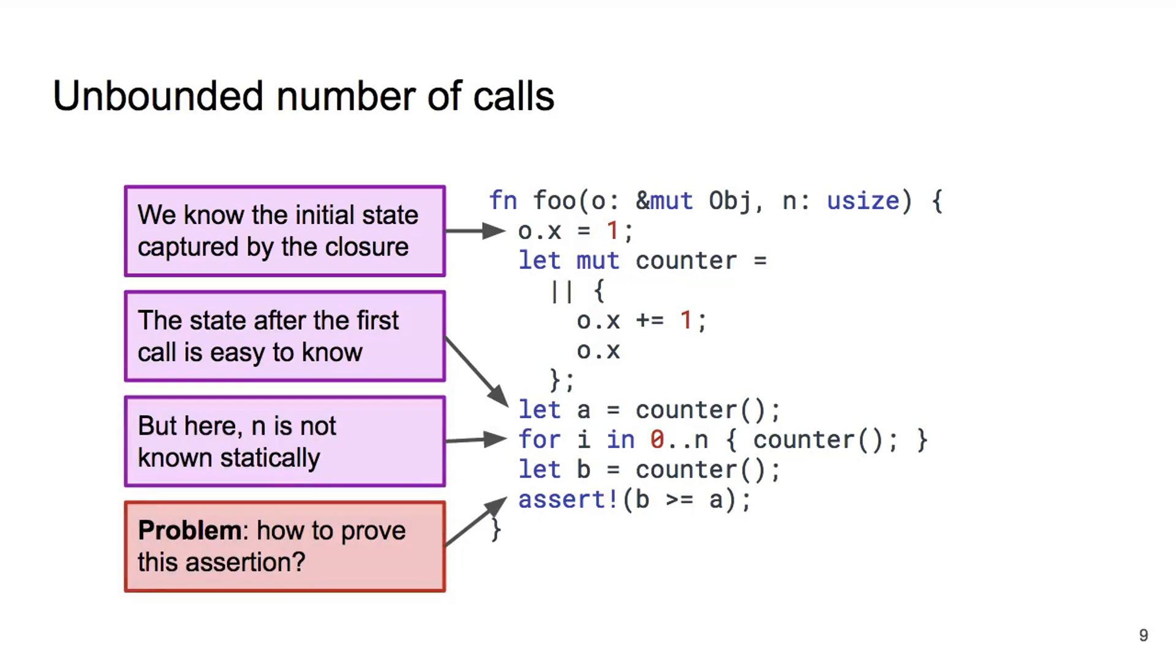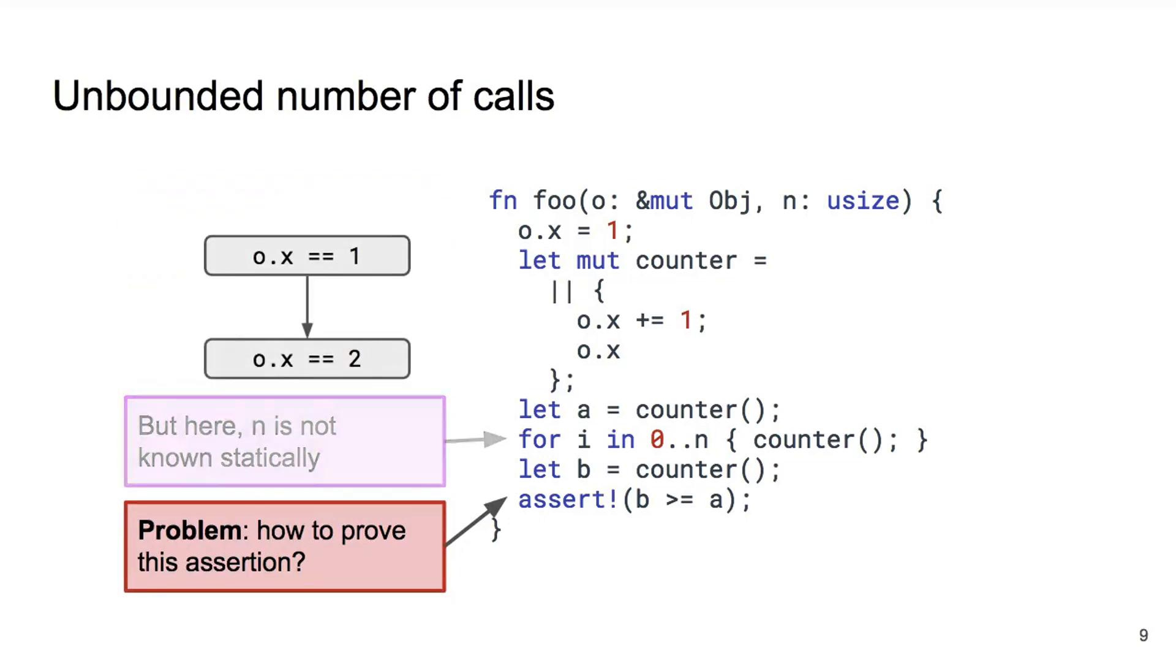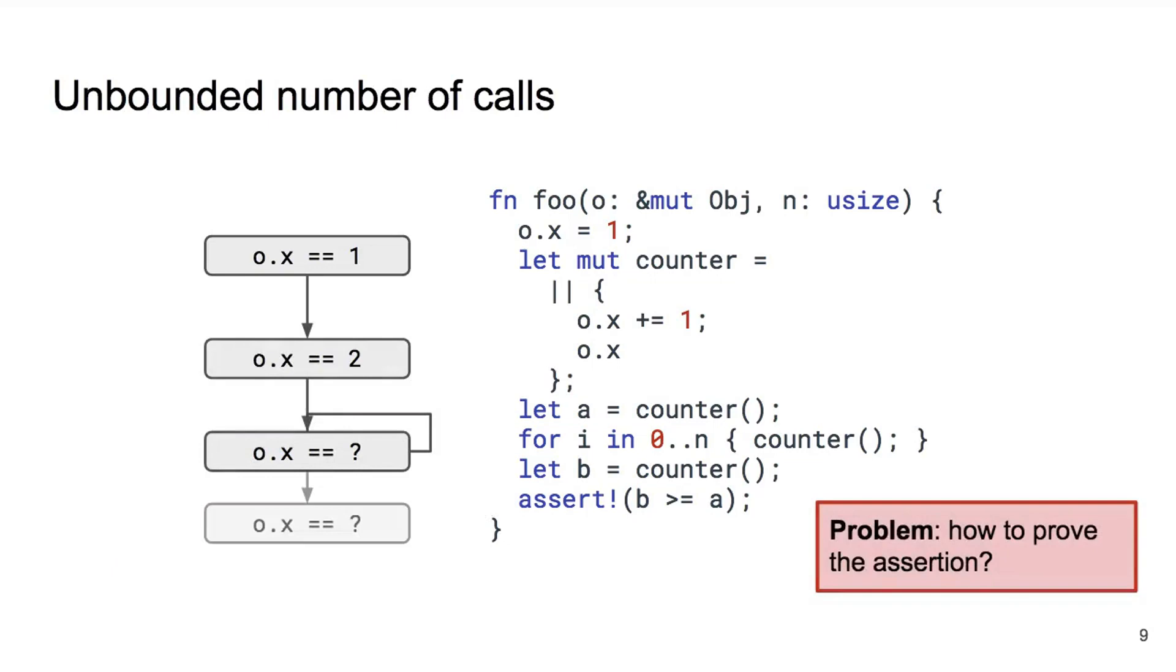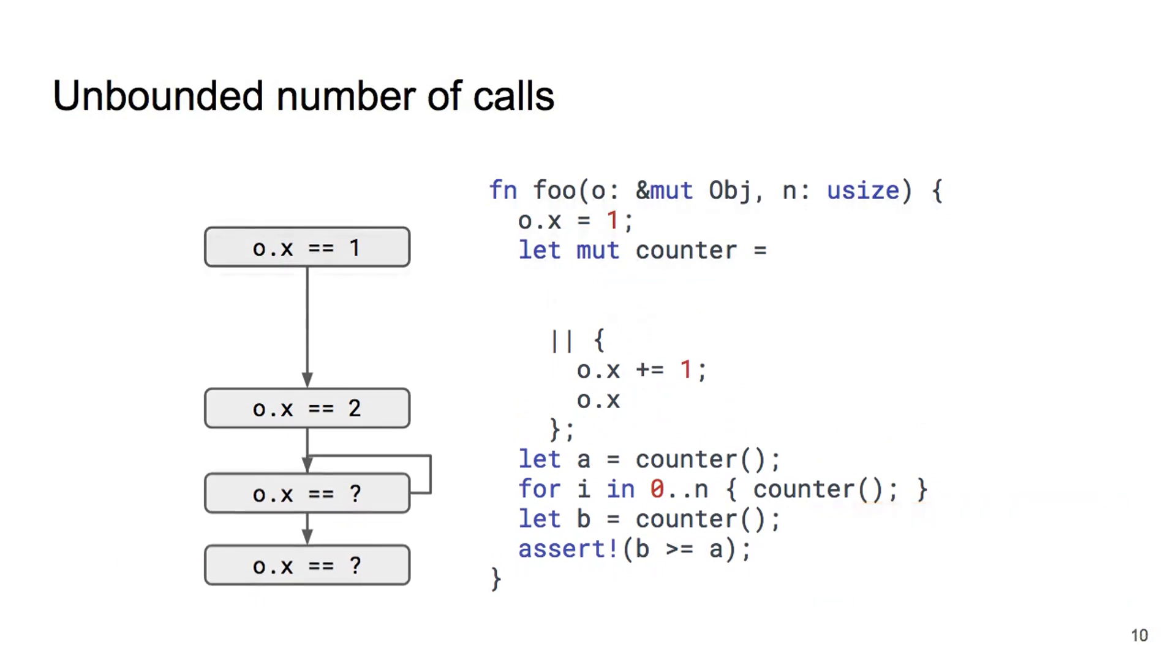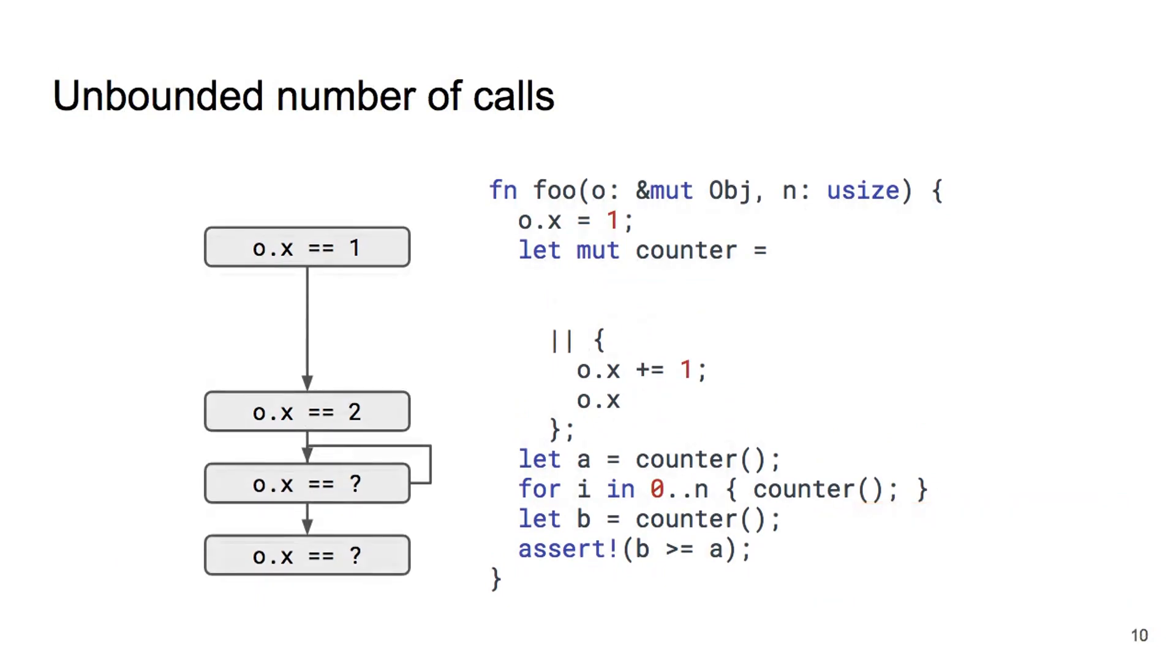Let's visualize the control flow of foo, focusing only on the state captured by the closure. Note the cycle corresponding to the for loop. While we don't know the exact values o.x will take, we know that it can only be increasing. In other words, each state has a greater or equal relationship to its predecessor.